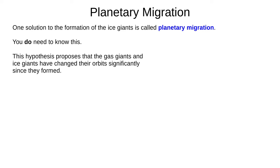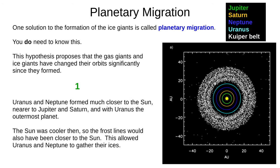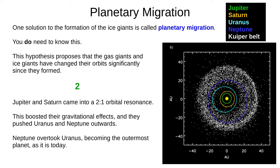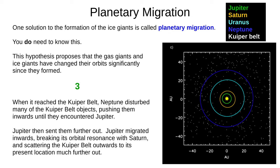A popular answer to this problem is called planetary migration, and you do need to know this for the GCSE. This hypothesis says that the giant planets have changed their orbits significantly since they formed. Originally, Uranus and Neptune formed much closer to the Sun, with Uranus further out than Neptune. The Sun was cooler then, and the frost lines were closer to the Sun, so Uranus and Neptune could have gathered their ices more quickly. At some point, Jupiter and Saturn came into a two-to-one orbital resonance — this boosted their gravitational effects, and they pushed Uranus and Neptune outwards. Neptune overtook Uranus, becoming the outermost planet as it is today. At this point, the Kuiper belt was much closer to the Sun than it is now. When Neptune reached the Kuiper belt, it disturbed these objects, pushing them inward. When they encountered Jupiter, Jupiter's gravity pushed them further out. This scattered the Kuiper belt objects to their present location and pushed Jupiter closer to the Sun, breaking its orbital resonance with Saturn.